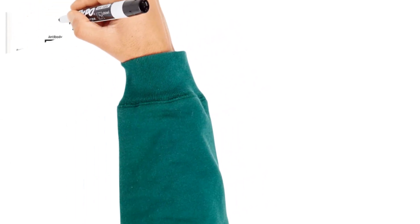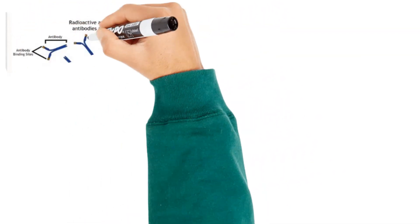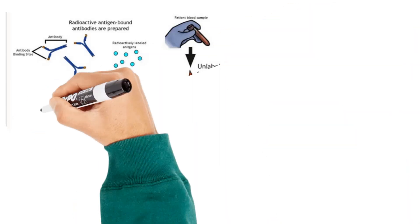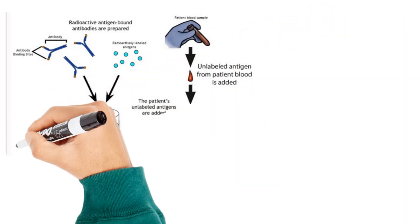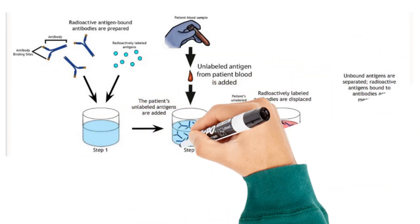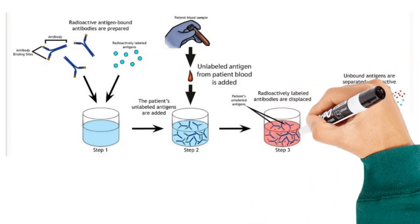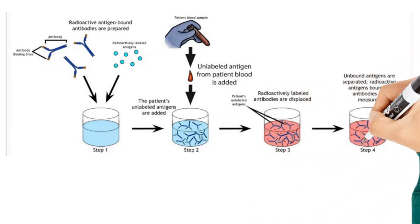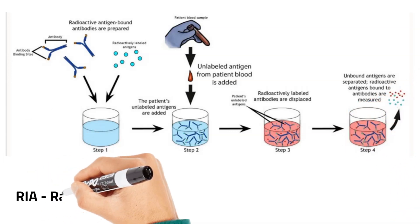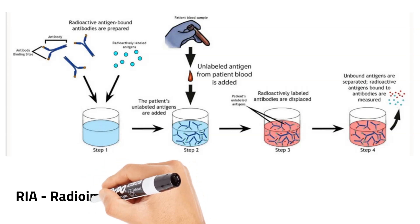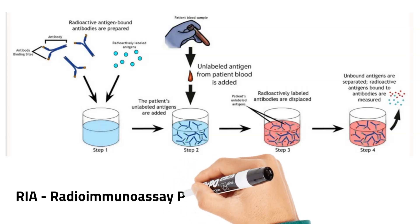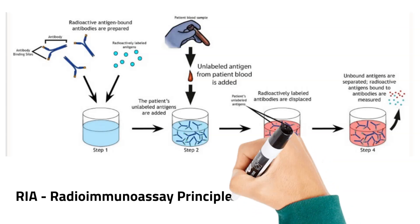Let's now look at the principles of the most commonly used immunoassays. First up, radioimmunoassay. It involves the use of radioactive labeled antigens bound to specific antibodies in the reagent. When the unlabeled antigens or analyte of interest in the sample is added, they compete with the radioactive labeled antigens to bind to their complementary antibodies and replace the bound labeled antigens. The replaced unbound radioactive labeled antigens decrease the radioactivity of the antigen-antibody complex, which is measured, and the radioactivity is therefore inversely proportional to the amount of analyte of interest present in the sample.